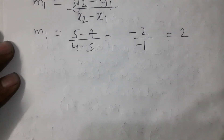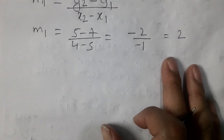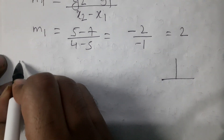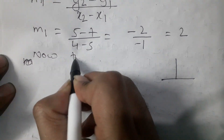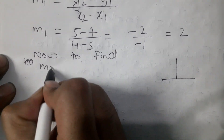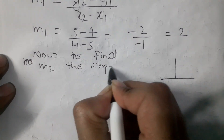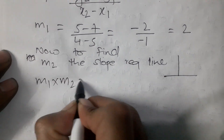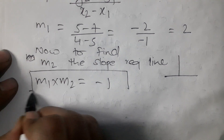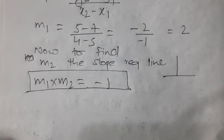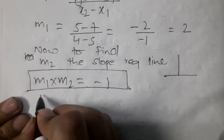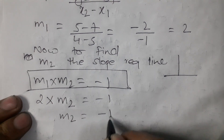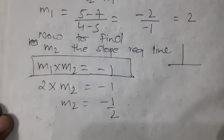Since our line and the helper line are perpendicular, we use the relation m1 times m2 equals minus 1. With m1 equal to 2, we get m2 equals minus 1 by 2. So now we have everything ready: x1 is 9 by 2, y1 is 6, and m2 is minus 1 by 2.